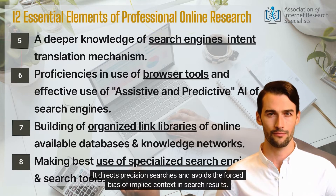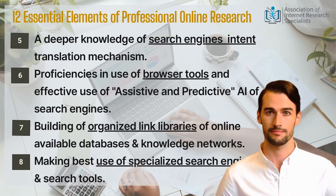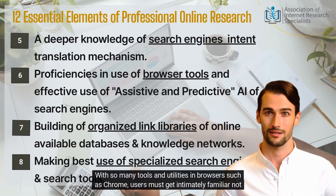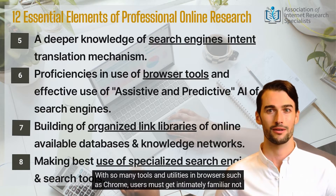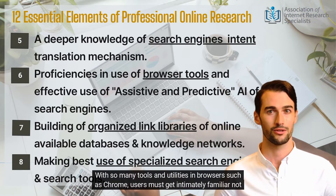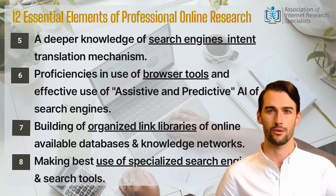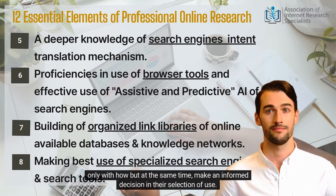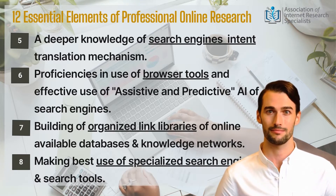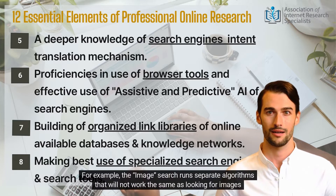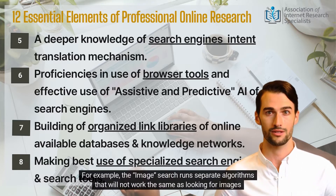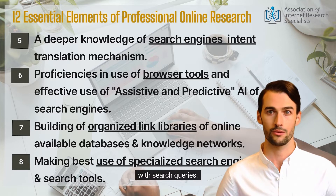Element six: with so many tools and utilities in browsers such as Chrome, users must get intimately familiar not only with how to use them, but also make an informed decision in their selection. For example, image search runs separate algorithms that will not work the same as looking for images with standard search queries. Each tool or utility has its advantages and limitations.